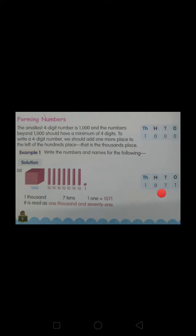So, one thousand, and one, two, three, four, five, six, seven tens, and one one. This is equal to one thousand and seventy one. So one thousand seventy one is the answer.